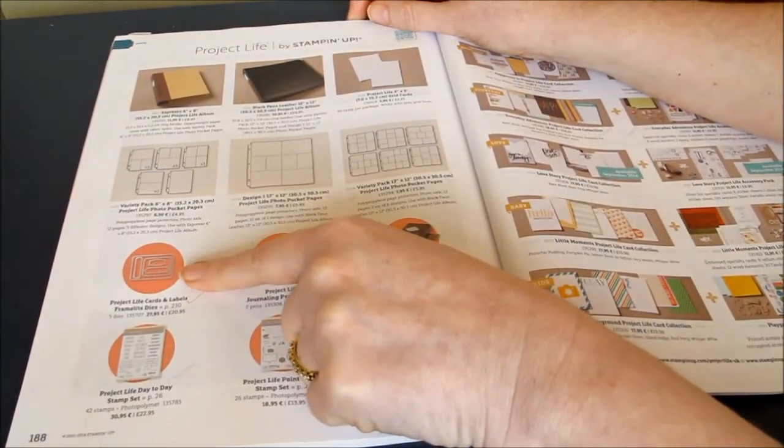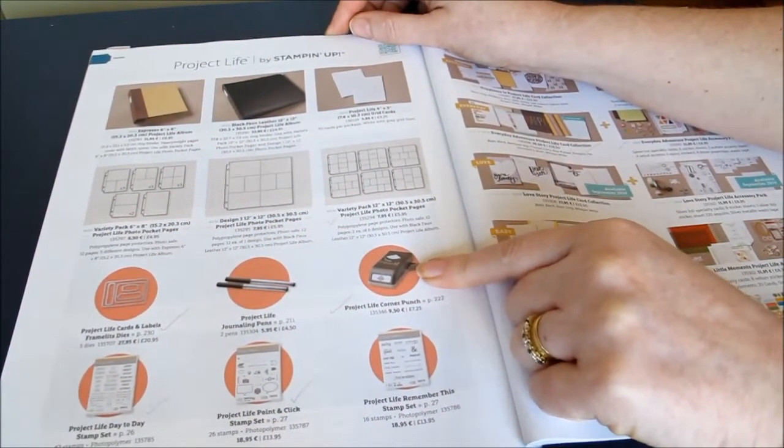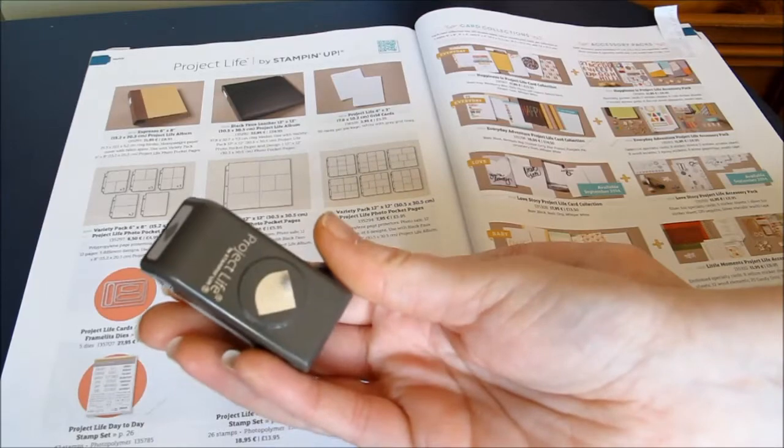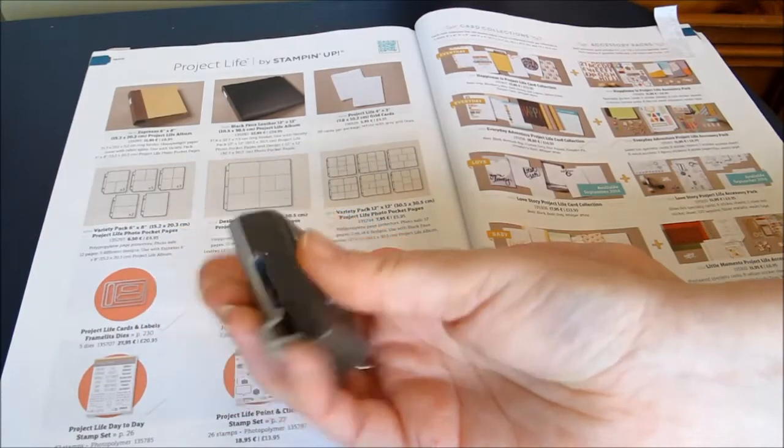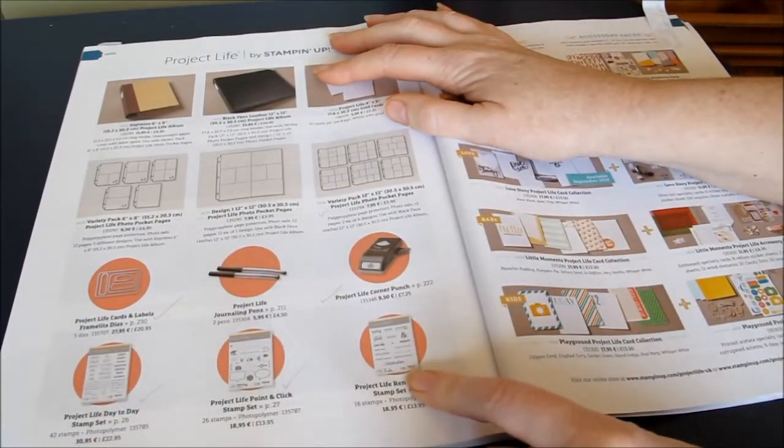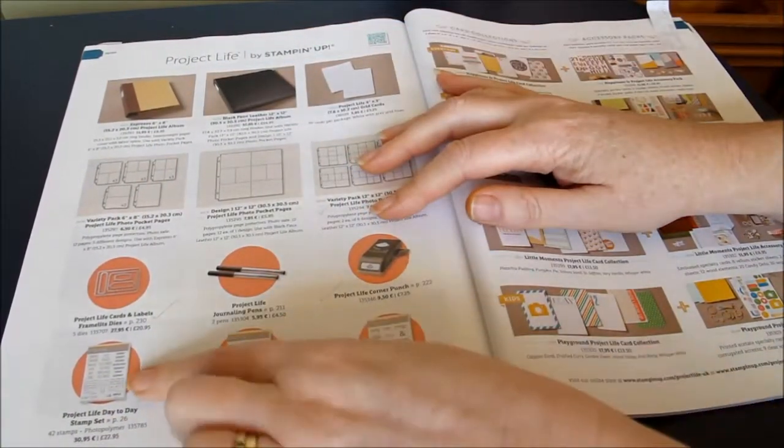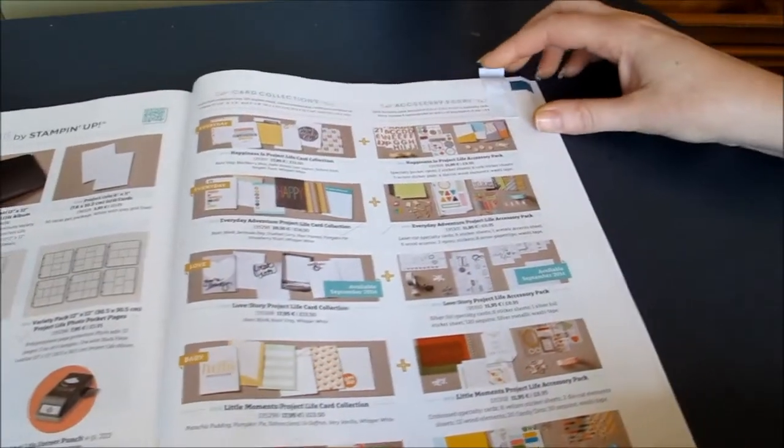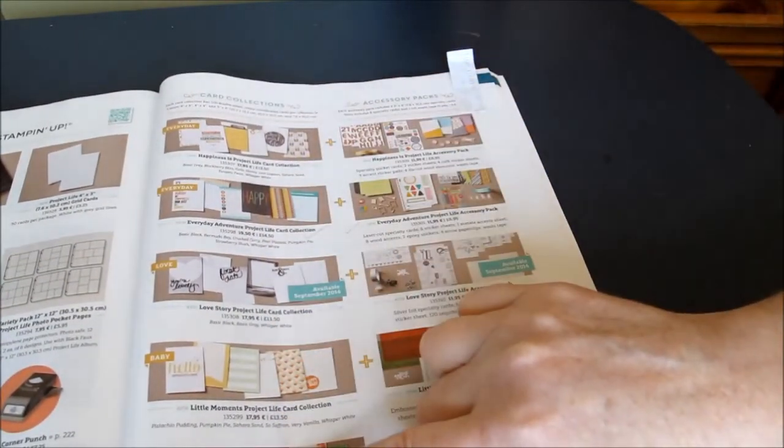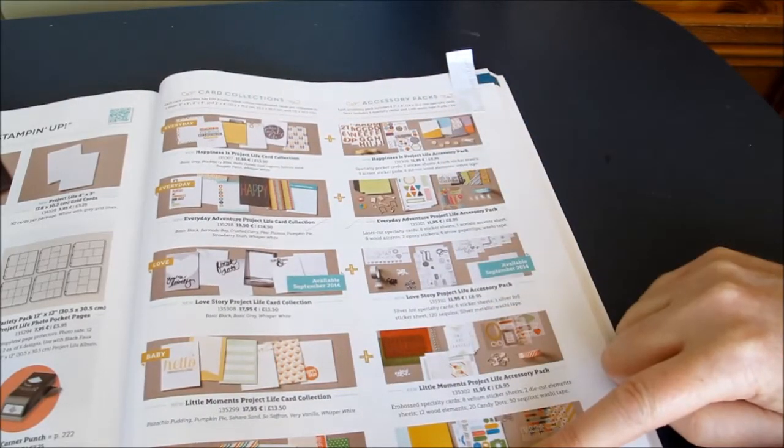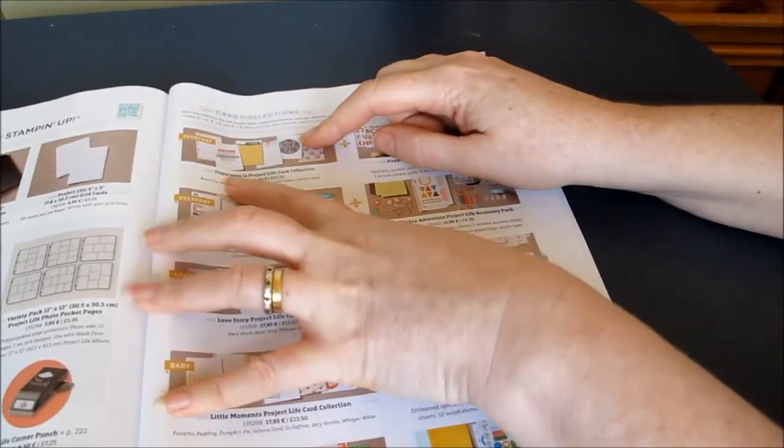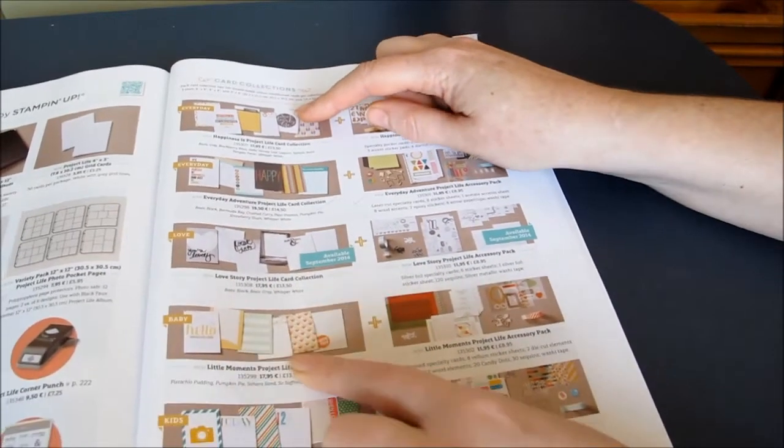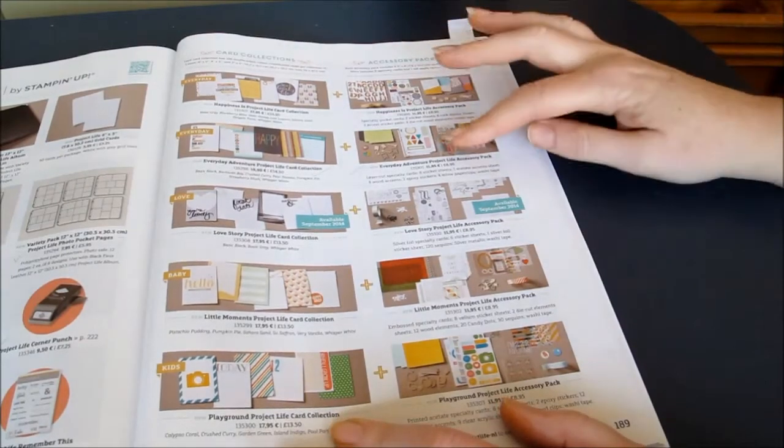Journaling pens, that's the die set. This is the Project Life corner rounder and that was available on pre-order. It's a nice dinky little thing so that's handy for card making and everything else as well. Nice little corner rounder. That's your three sets again. So they're all in with the other products as well. Then you've got card collections listed down here and accessory packs listed down here. So your card collections are Happiness, Everyday Adventure, Love Story, Little Moments and Playground Projects and then the accessory packs as well.